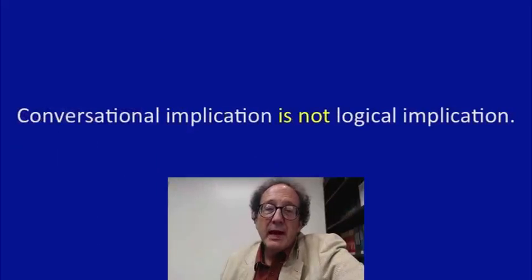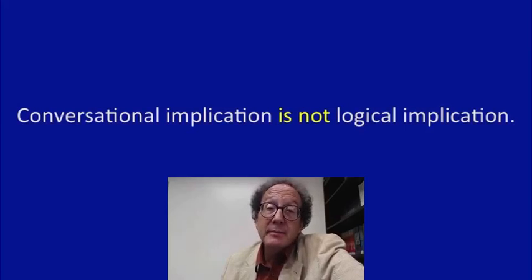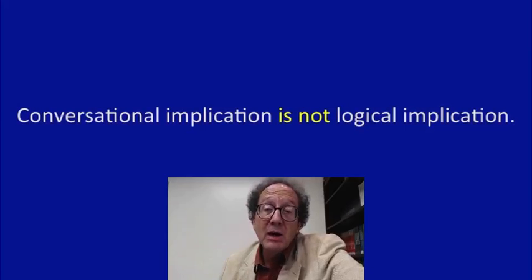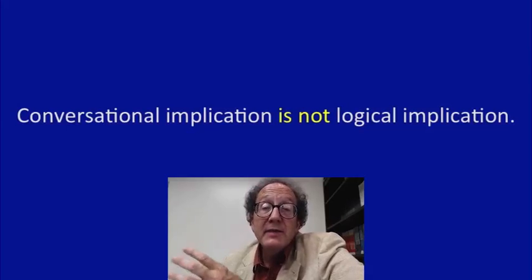This distinction between conversational implication and logical entailment is crucial to arguments because it tells us something about how to refute arguments. When you don't like the premise of an argument because it's misleading — because it conversationally implies something false — that's not a way to show that the premise is false. In order to show it's false, you have to show that it actually logically entails something that's false, and then you can infer that the premise itself is false.